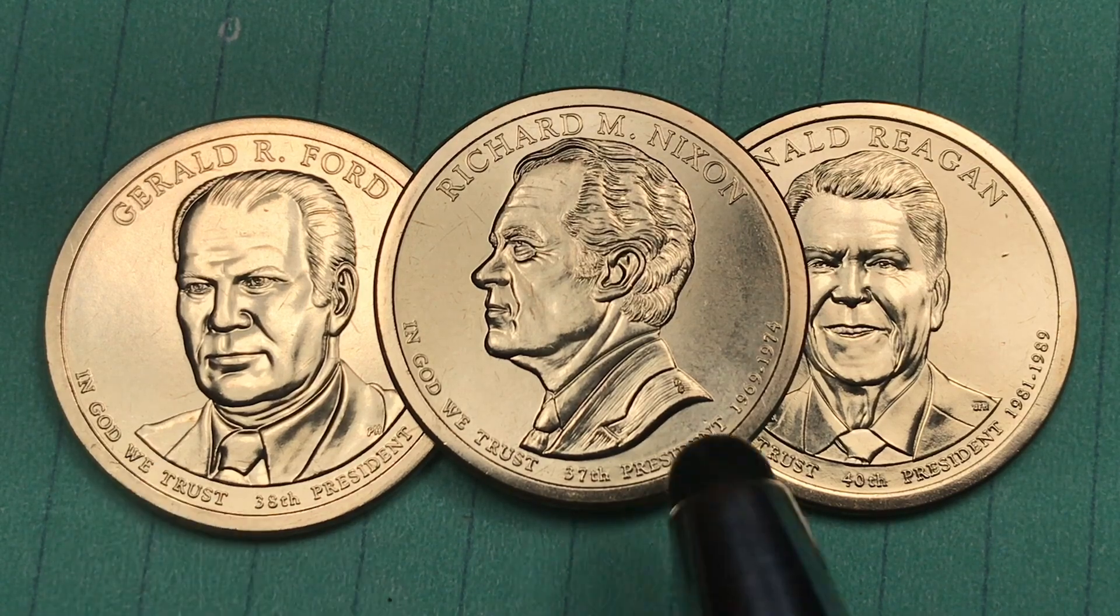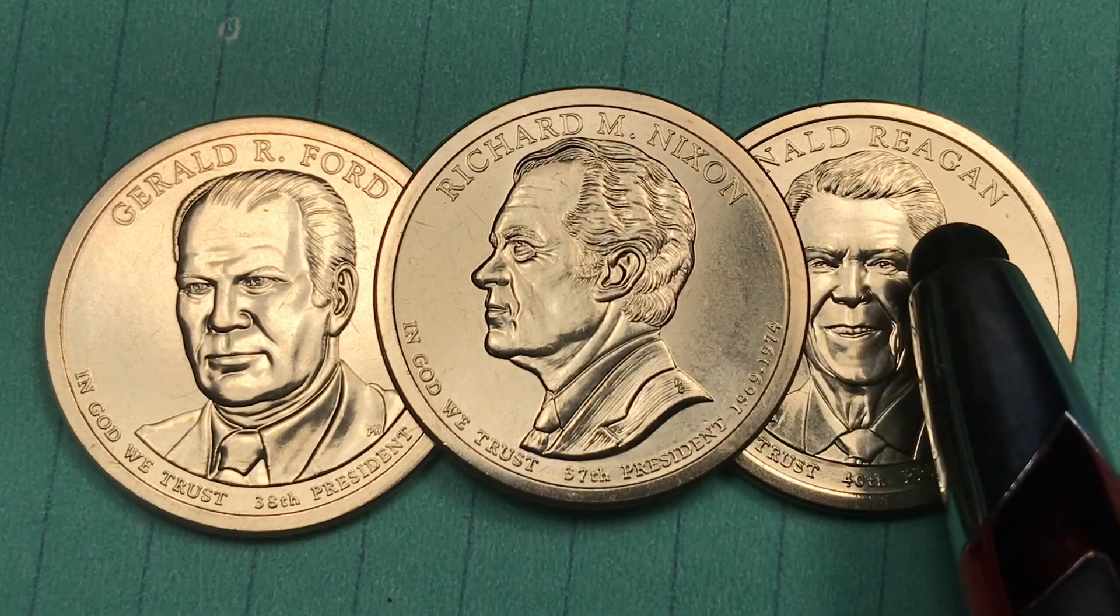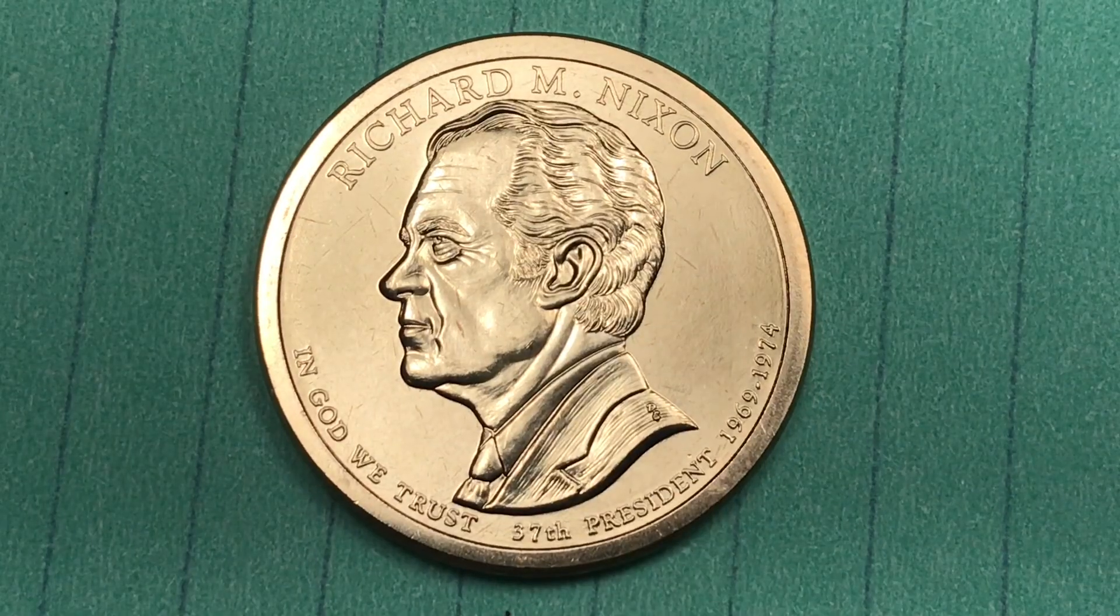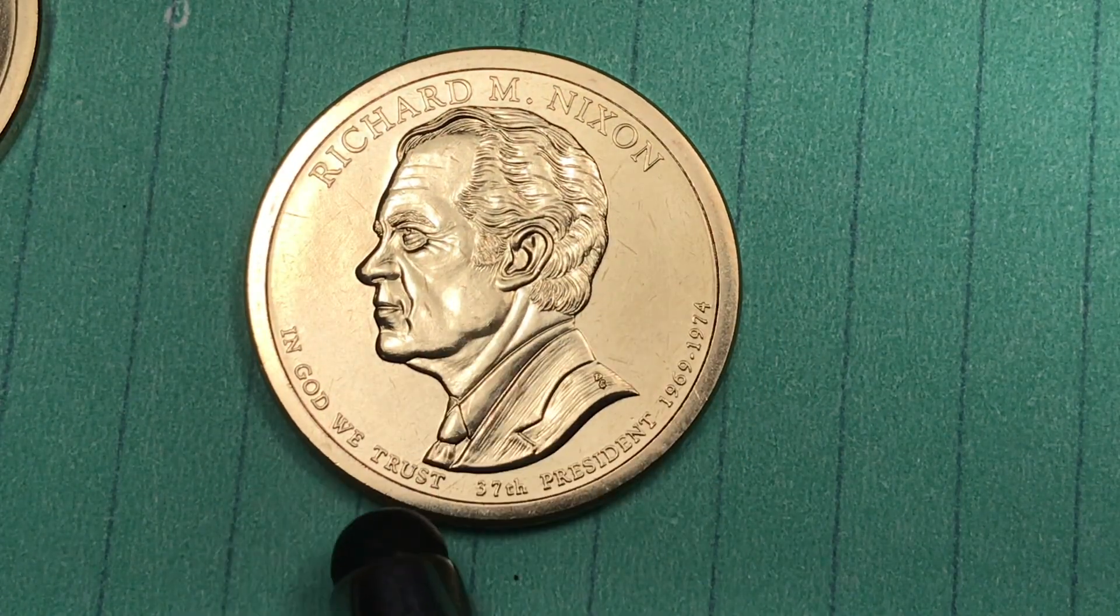In 2016 they put three different presidential dollars out: the Gerald Ford, the Richard Nixon, and Ronald Reagan. Let's just talk about Nixon. The first of the 2016 coins says Richard M. Nixon at the top and In God We Trust.